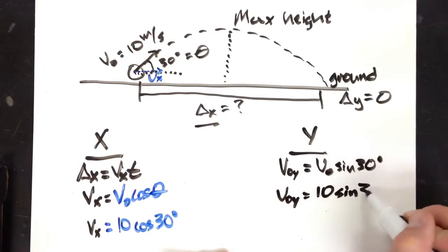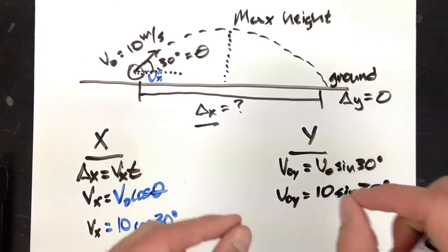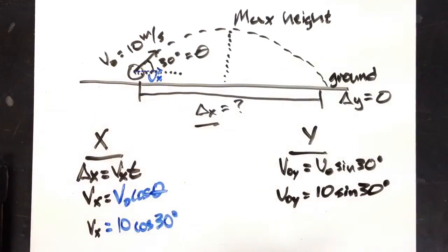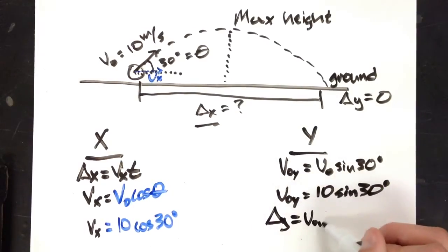But what about that time? Because I need that for the delta x. Well, I can look at my delta y equation. Delta y equals v0y t plus 1 half ay t squared.